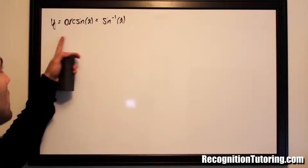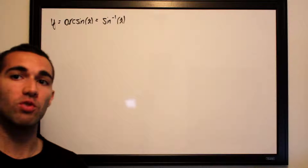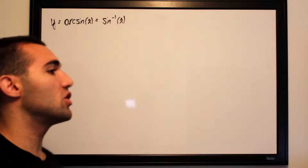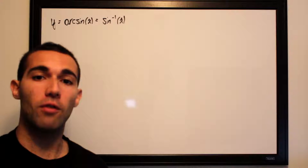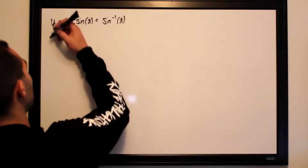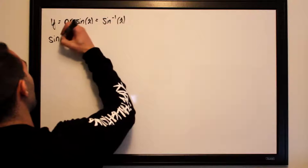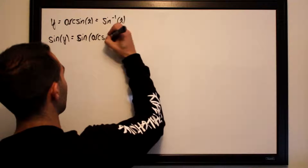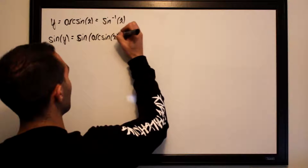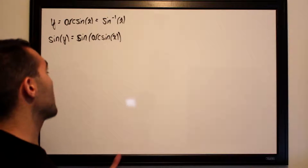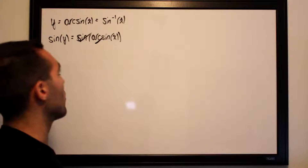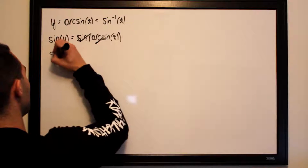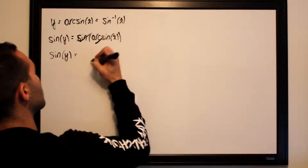First we have our function y is equal to arc sine of x. The first thing we want to do is isolate and solve for x. We'll take advantage of the fact that sine and arc sine are inverses of each other, so we'll take the sine of both sides: sine of y is equal to the sine of arc sine of x. Since they cancel each other out, all we're left with is sine of y is equal to x.